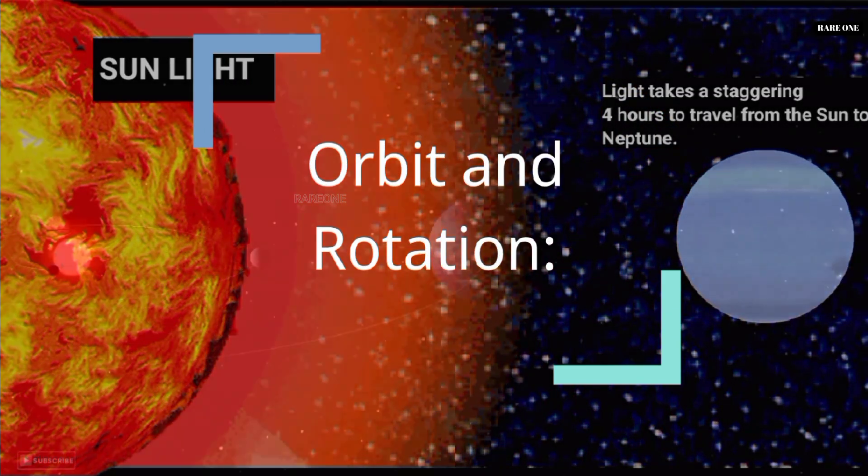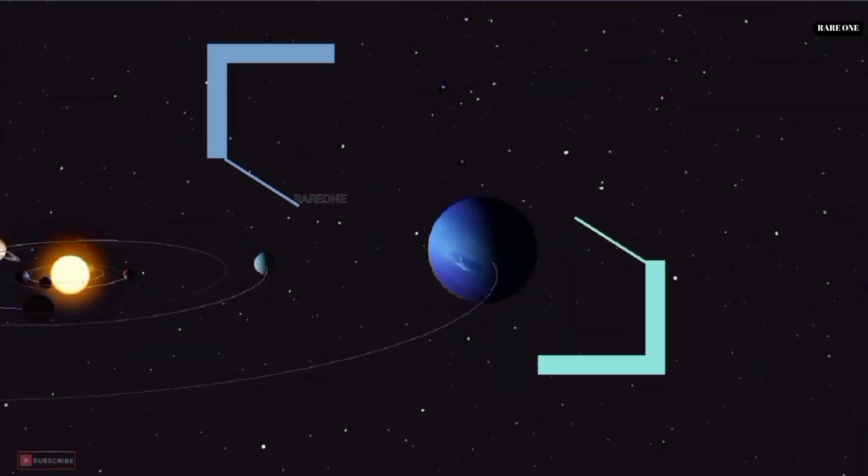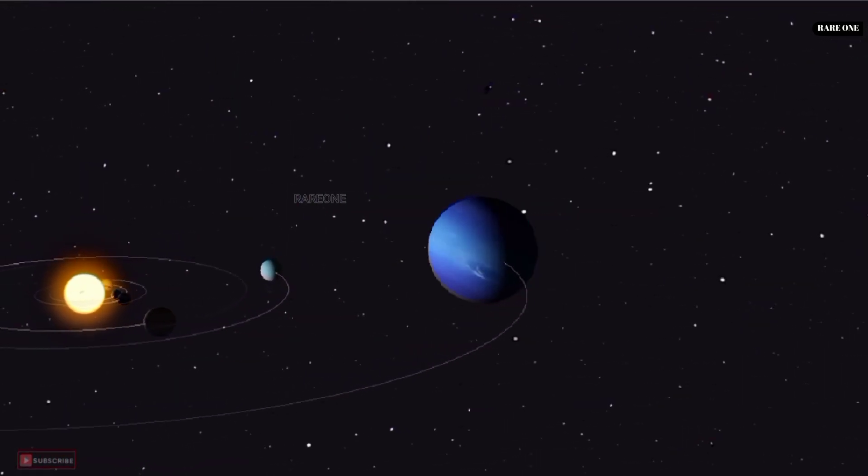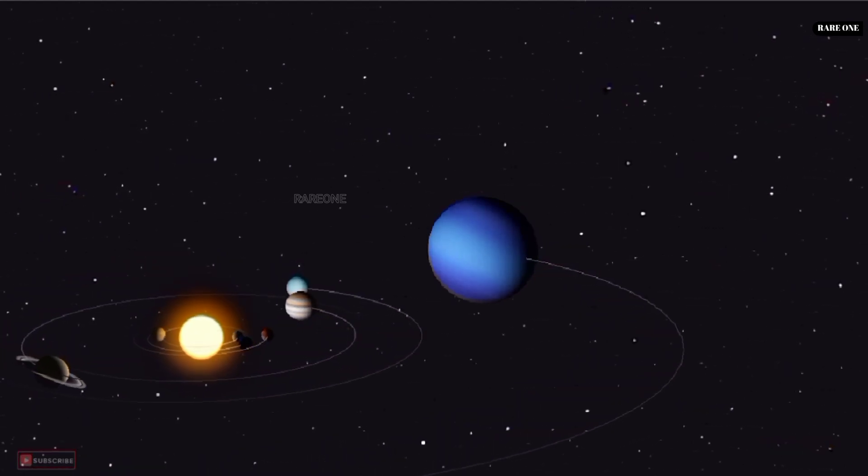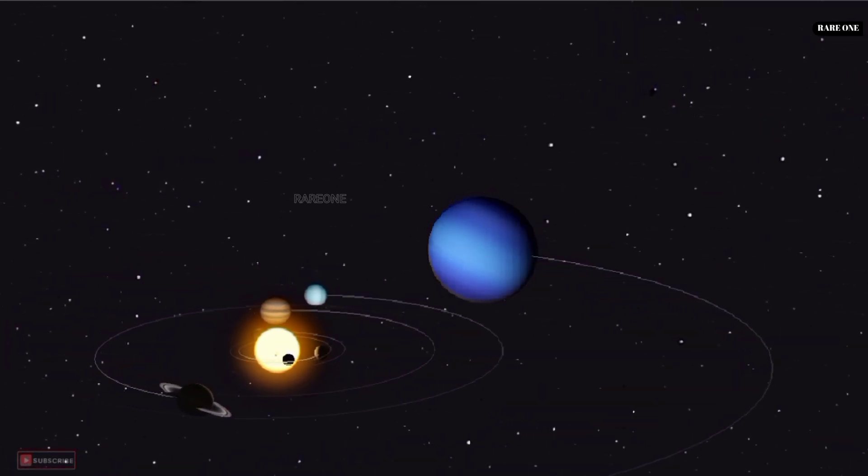One Neptunian day lasts just over 16 hours, but its year is equivalent to a mind-boggling 165 Earth years. That means a single Neptunian year lasts nearly 60,000 Earth days.